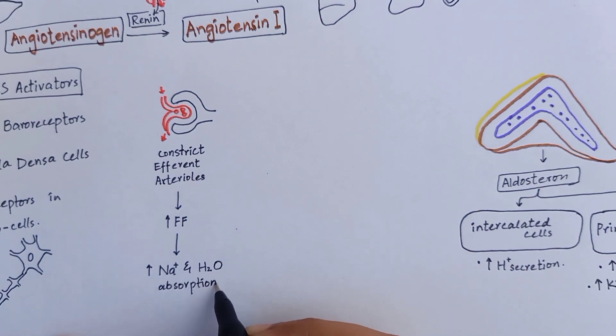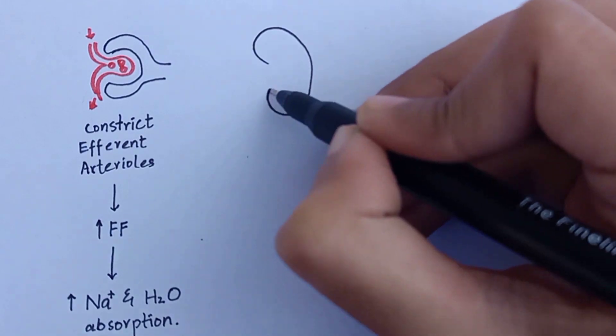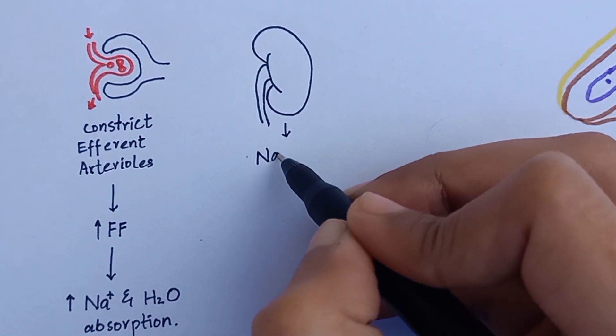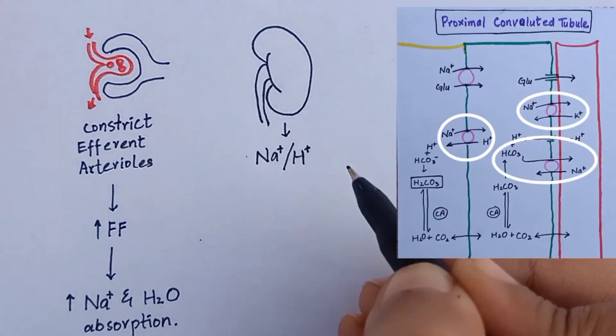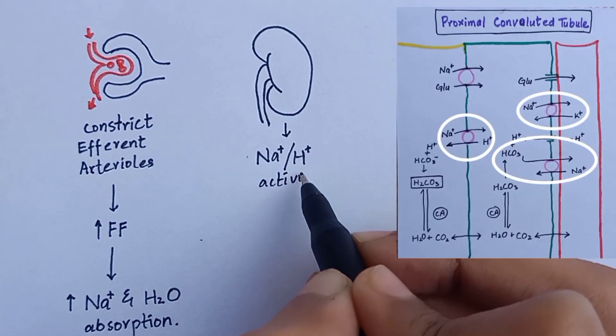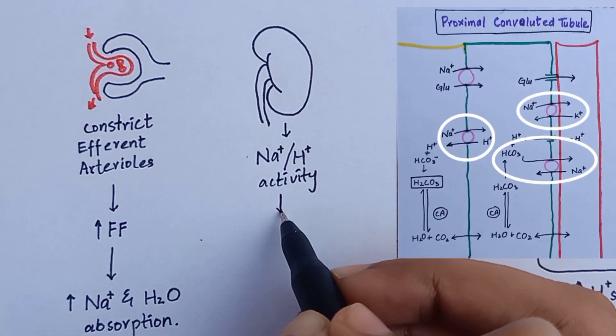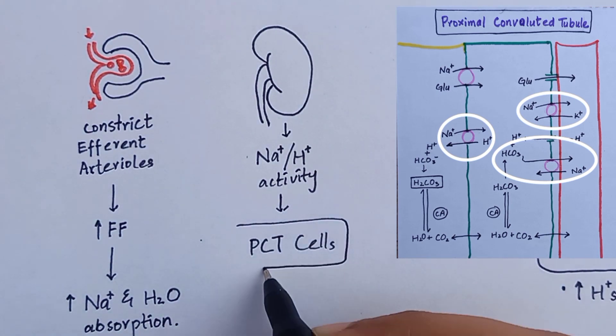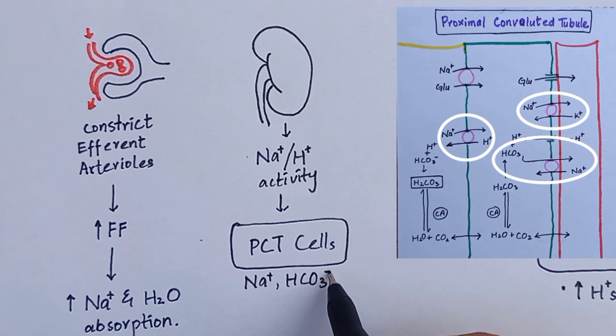The second renal effect of angiotensin 2 is the direct sodium reabsorption by stimulating sodium-potassium ATPase pump on basal membrane and by stimulating sodium-bicarbonate co-transporter on basal membrane, especially on proximal convoluted tubular cells. It also stimulates sodium-hydrogen exchange transporter on luminal cell membrane.